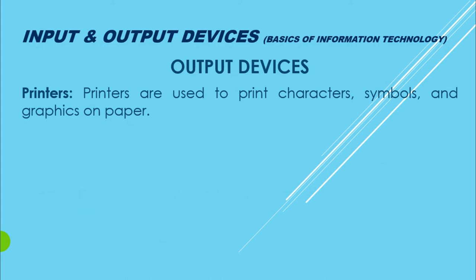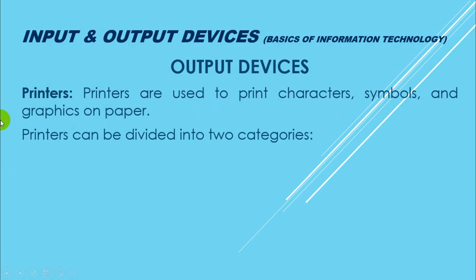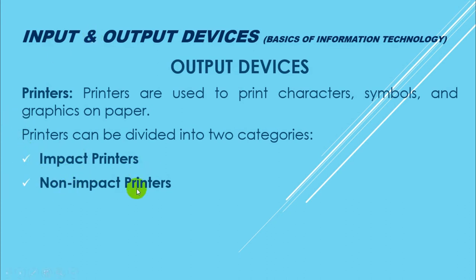Screen ki types complete ho gayi. Ab output devices mein printers: printers aapko tangible prints dete hain — tangible copy, jisko hum simply hard copy bhi kehte hain, aisi copies jinko aap touch kar sakte hain, physically in contact aa sakte hain. Printers are used to print characters, symbols, and graphics on paper. Printers can be divided into two categories: ek impact printer aur ek non-impact printer. Impact matlab aisa effect jo asarandaz ho raha ho, aur non-impact jo kisi object pe asar na de raha ho.